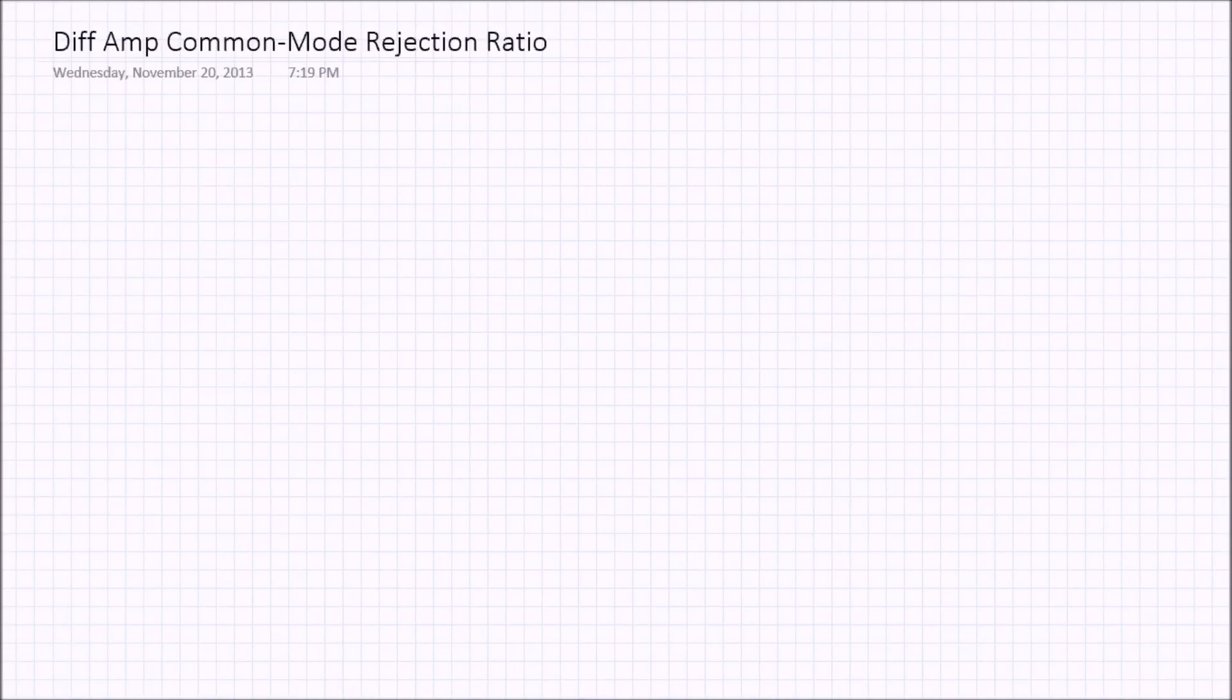I want to derive the common mode rejection ratio for a differential amplifier. So, the basic differential amplifier looks like this.